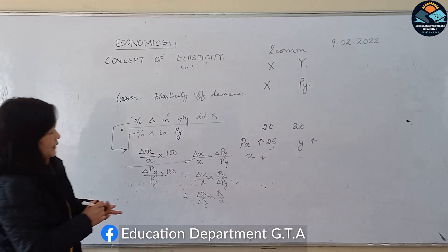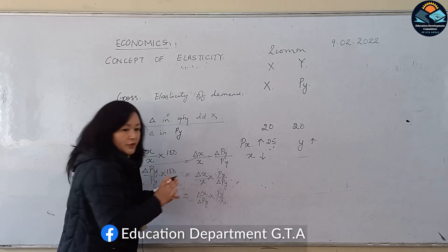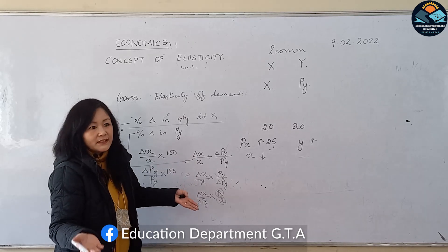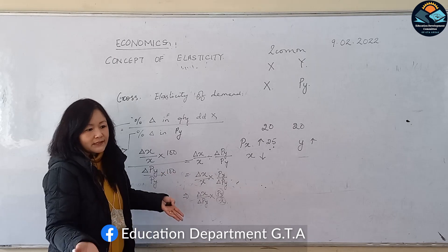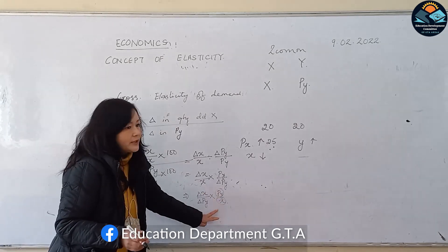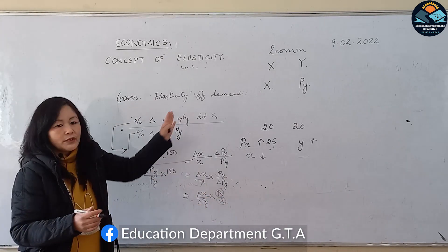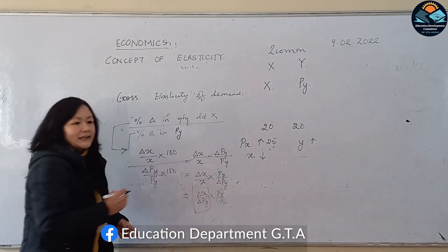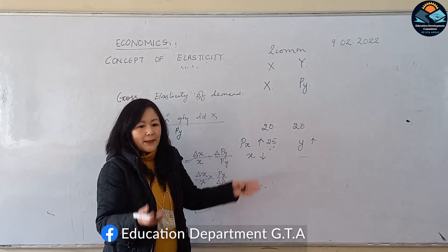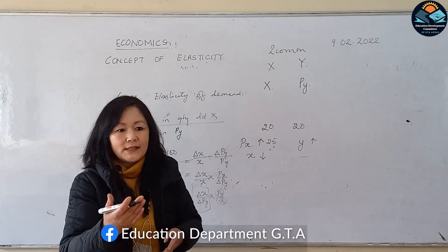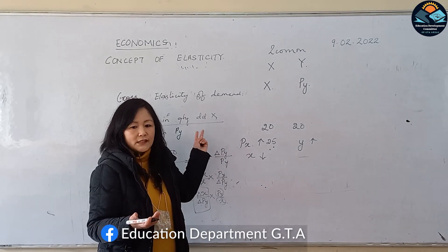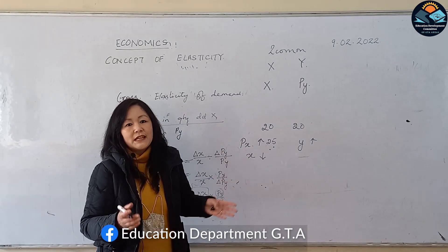Here also we see that PY and X are always positive — price can never be negative, nor can consumption be negative. So the sign of cross elasticity of demand depends upon ΔX and ΔPY. In case of substitutes, if the price of X rises, demand for Y rises as well — so the cross elasticity of demand is positive in the case of substitutes.